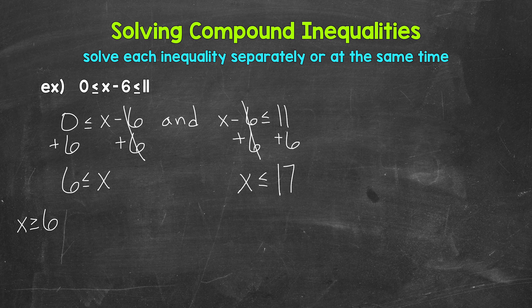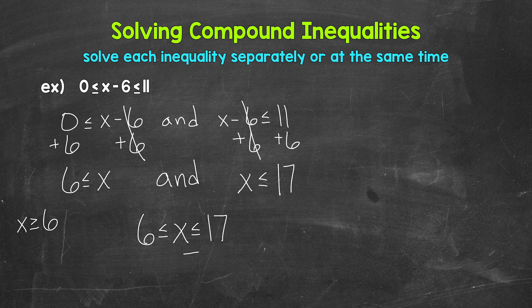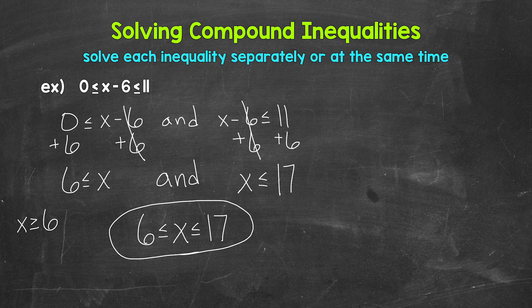x has to be greater than or equal to 6 and x has to be less than or equal to 17. We can combine these and write this compound inequality without the word 'and': x is greater than or equal to 6 and less than or equal to 17. x has to satisfy both. Remember, a solution of a compound inequality involving AND is any number that makes both inequalities true — it has to work for both.